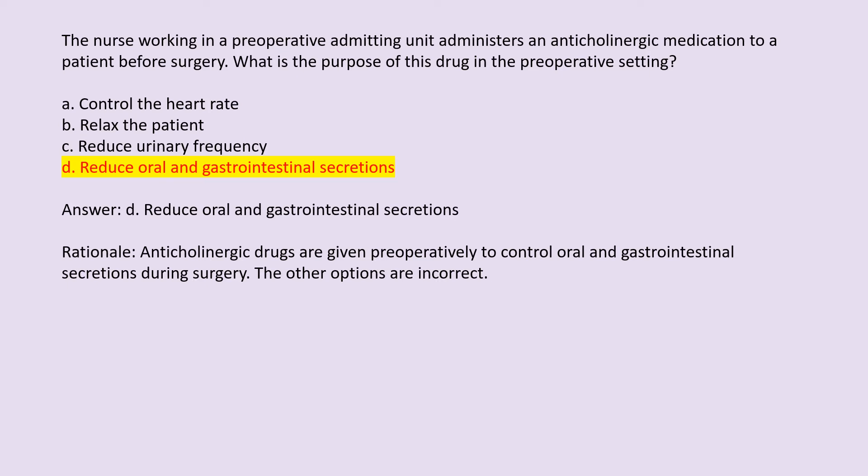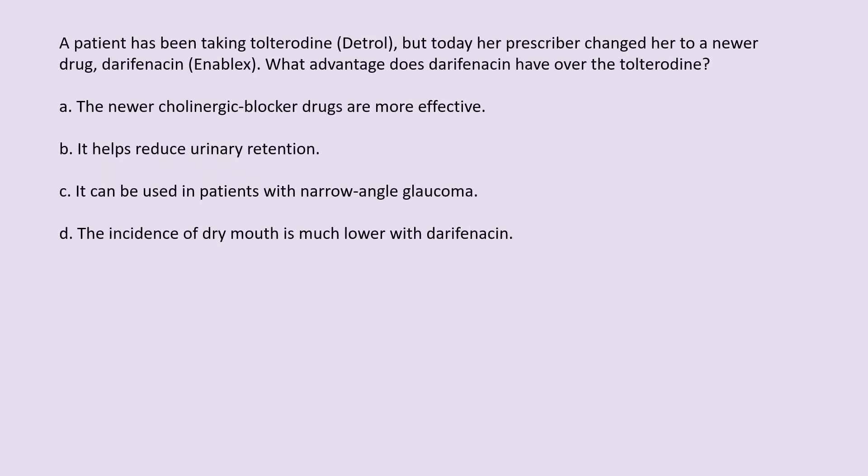A patient has been taking tolterodine (Detrol), but today her prescriber changed her to a newer drug, darifenacin (Enablex). What advantage does darifenacin have over tolterodine? A. The newer cholinergic blocker drugs are more effective. B. It helps reduce urinary retention. C. It can be used in patients with narrow-angle glaucoma. D. The incidence of dry mouth is much lower with darifenacin.